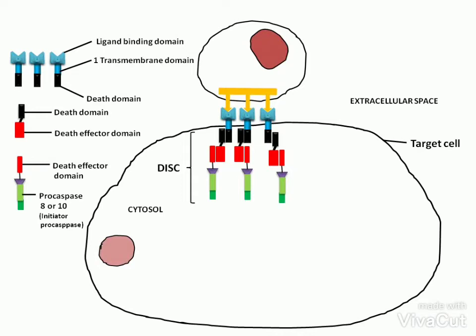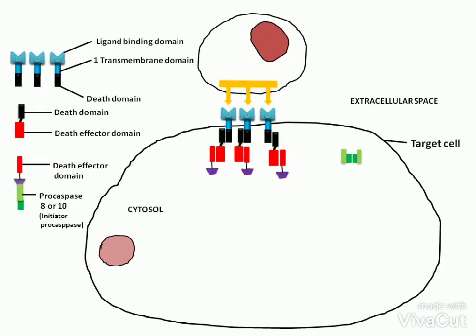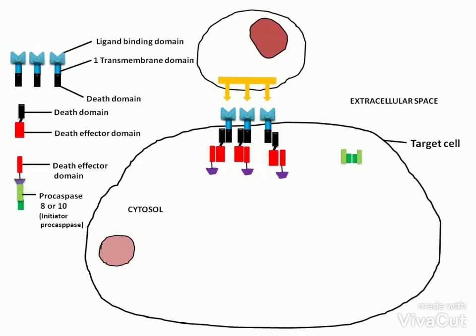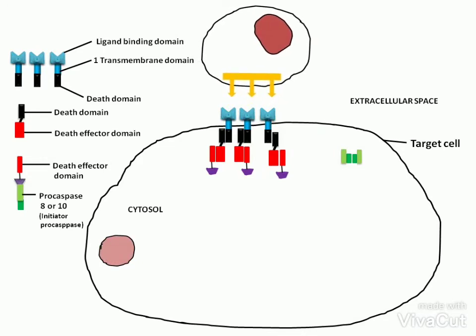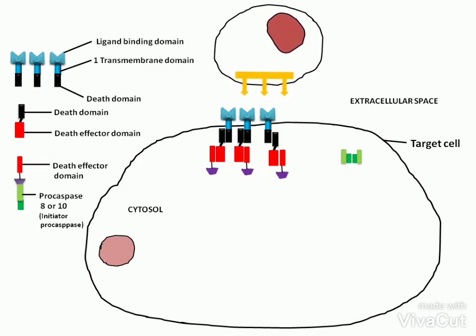After the activation of pro-caspase-8 or 10, the killer lymphocyte detaches from the target cell. Then the activated pro-caspase-8 or 10 cleave one another to stabilize the activated caspase-8 or 10.